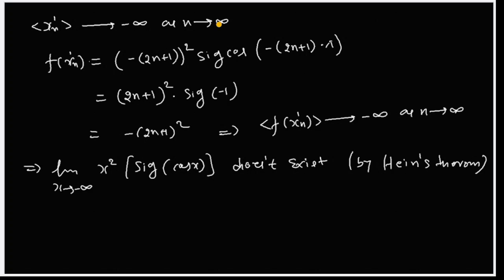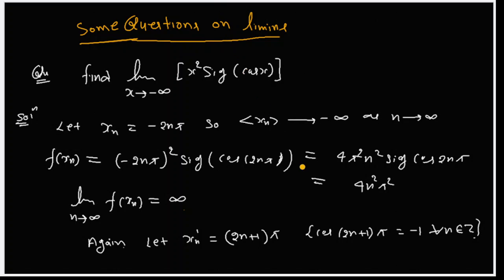If we substitute this sequence into the function, one part gives minus infinity squared, which goes to infinity. But for the cosine part, since we have an odd multiple of π in cos(x), the cosine of an odd multiple of π gives minus one. So we get one result from this sequence.